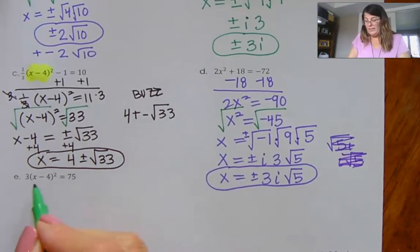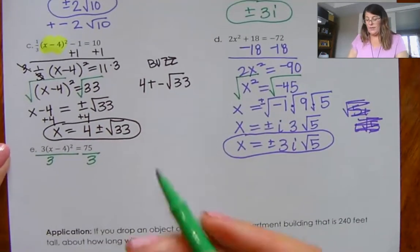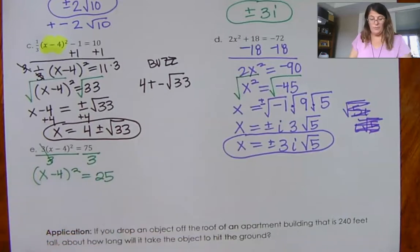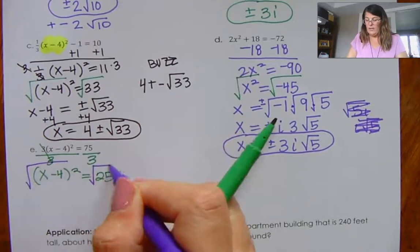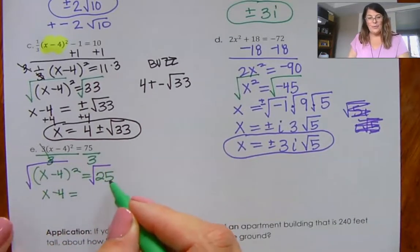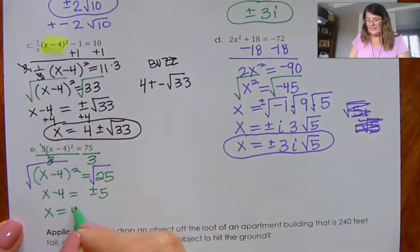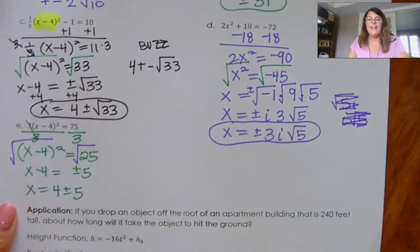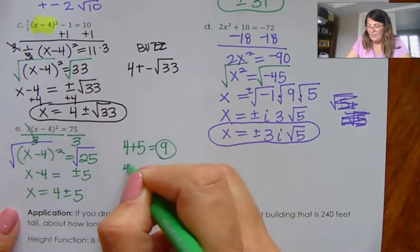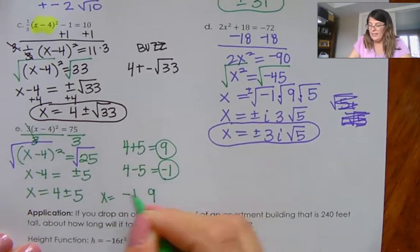For this next one, my goal is to get whatever is squared alone — not necessarily x; in this case it's x minus 4 again. So (x-4)² is equal to 25. Once I get the squared thing alone, I take the square root. This becomes x minus 4 equals plus or minus 5, since the square root of 25 is a perfect square. I add 4 over: x equals 4 plus or minus 5. So 4 plus 5 is 9 and 4 minus 5 is negative 1. My answers are negative 1 and 9.